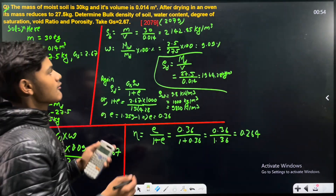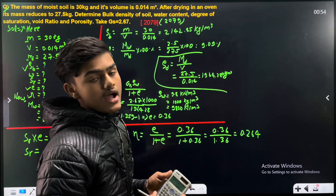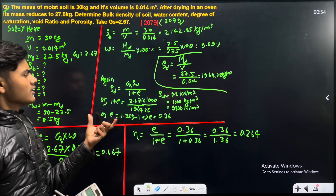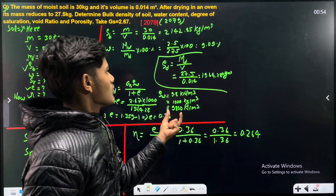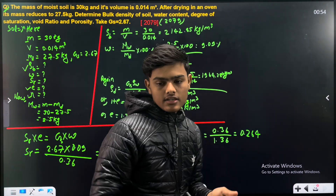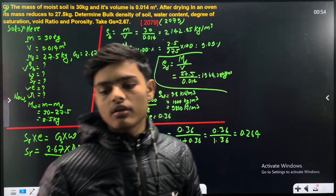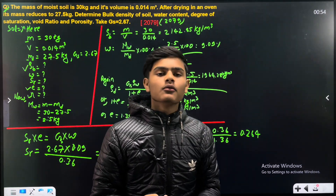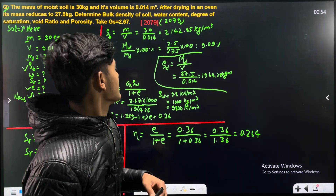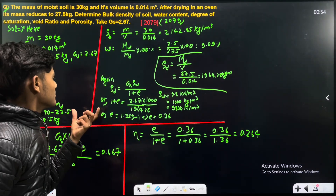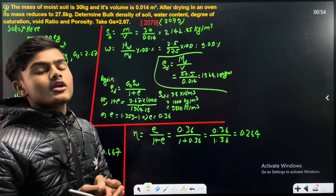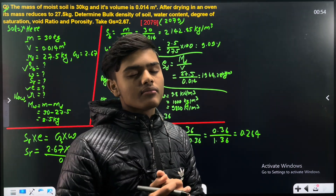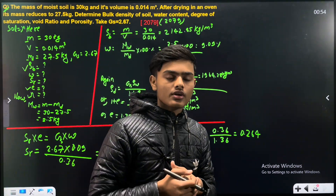So that completes this soil mechanics numerical. This was a well-solved numerical. Now moving on to the next question, numerical number 24 or 25.